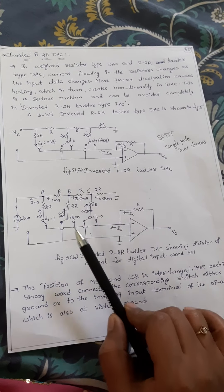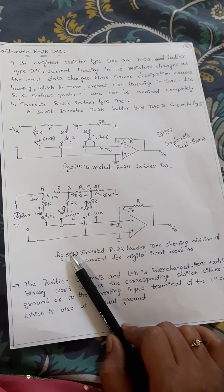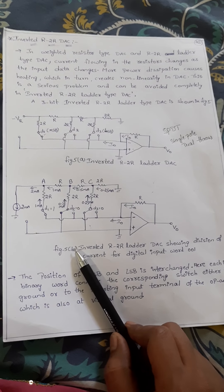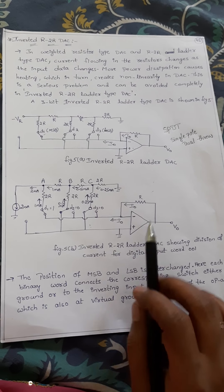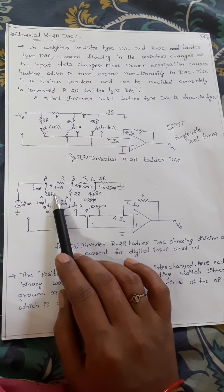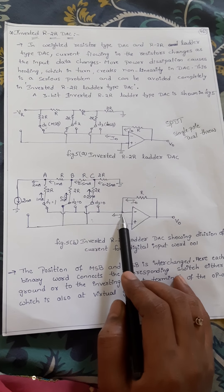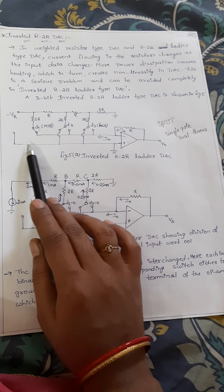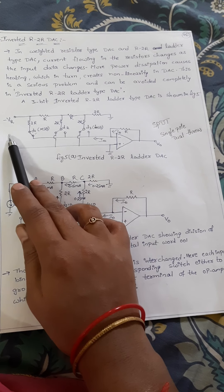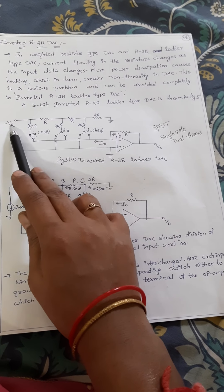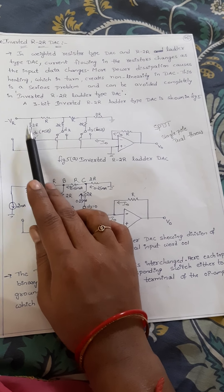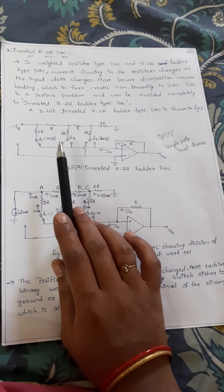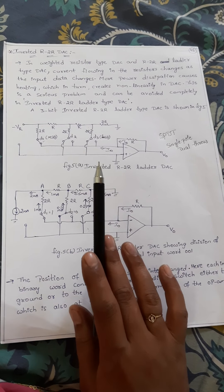Whatever the input you change, the current is not changing and the voltages across it also not changing, meaning power dissipation is reduced. So this is more effective than R2R ladder and weighted resistor DAC. The current will flow from the inverting input terminal to minus VR when D1 equals 1, and from ground to VR when D1 equals 0. The current through the feedback resistor R is the summing current depending upon the input binary word. This is about inverted R2R DAC. Thank you.